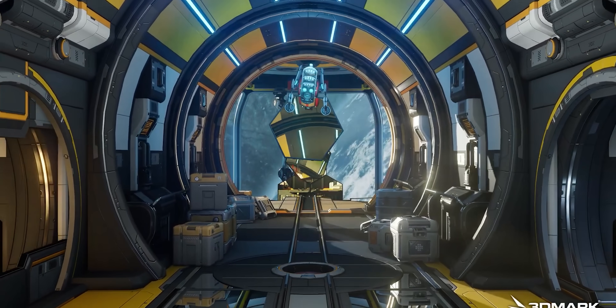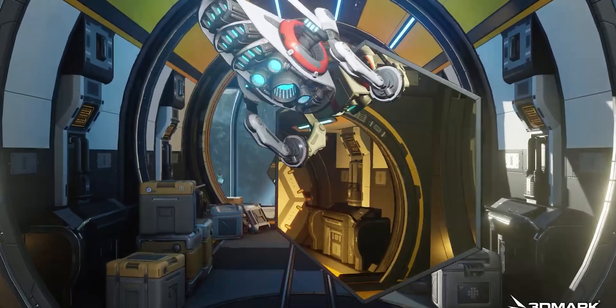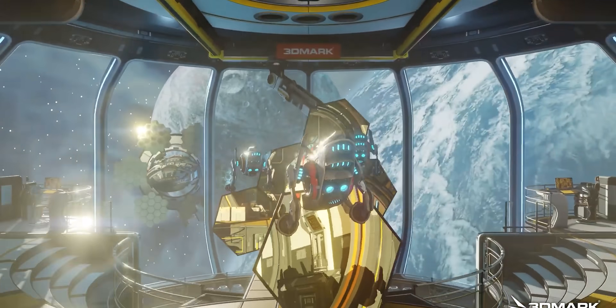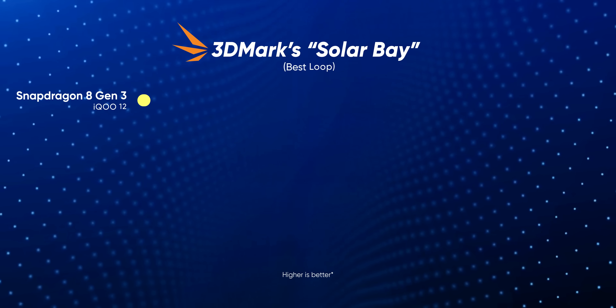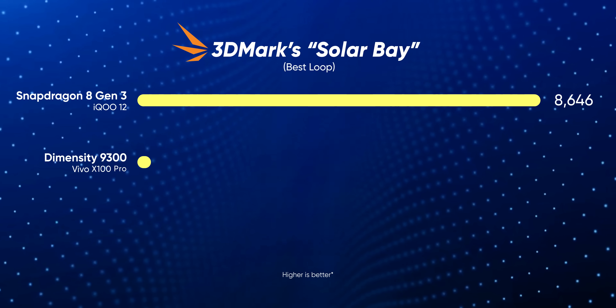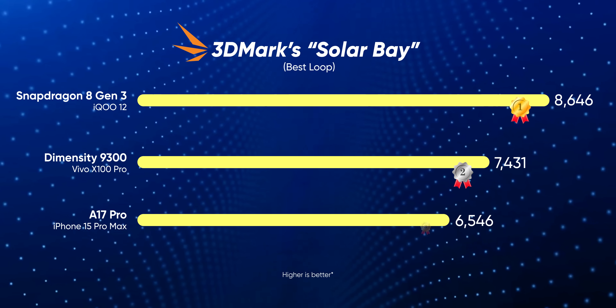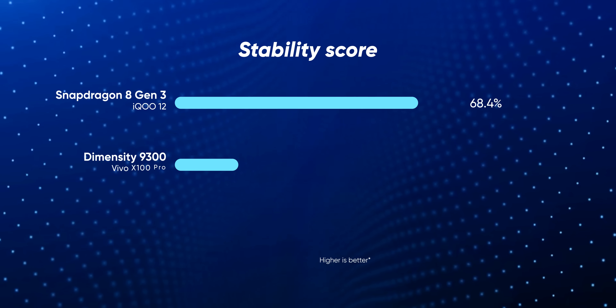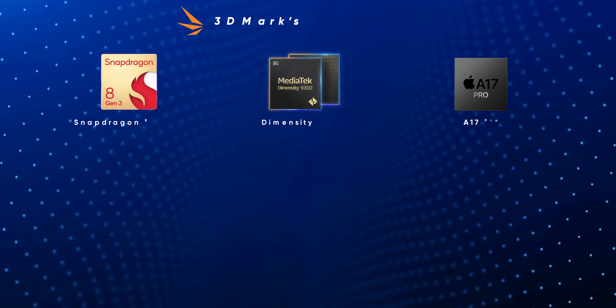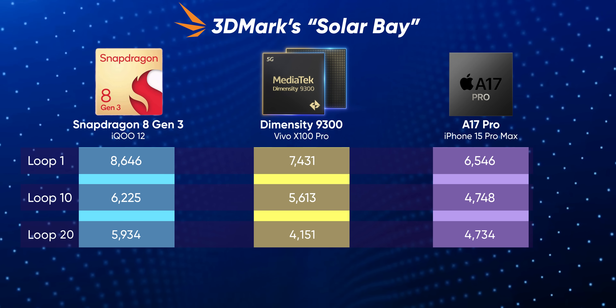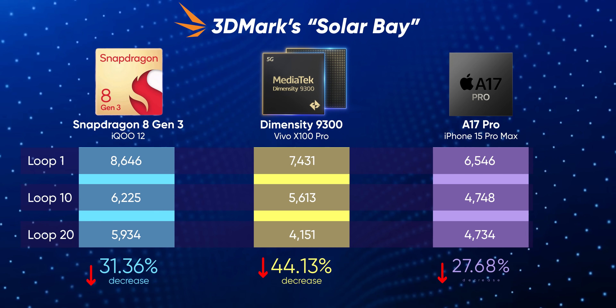Hardware-accelerated ray tracing is also a big focus on all three chips, so I turned to 3DMark's Solar Bay stress test, which mimics ray-traced heavy gaming workloads for 20 tests straight. As expected, the Snapdragon 8 Gen 3 came first, the Dimensity 9300 second, and the A17 Pro third. But even though MediaTek was the runner-up in our ray tracing test, it finished with an embarrassing stability score of just 55%, meaning it lost 45% of its peak performance between the first and last loop.